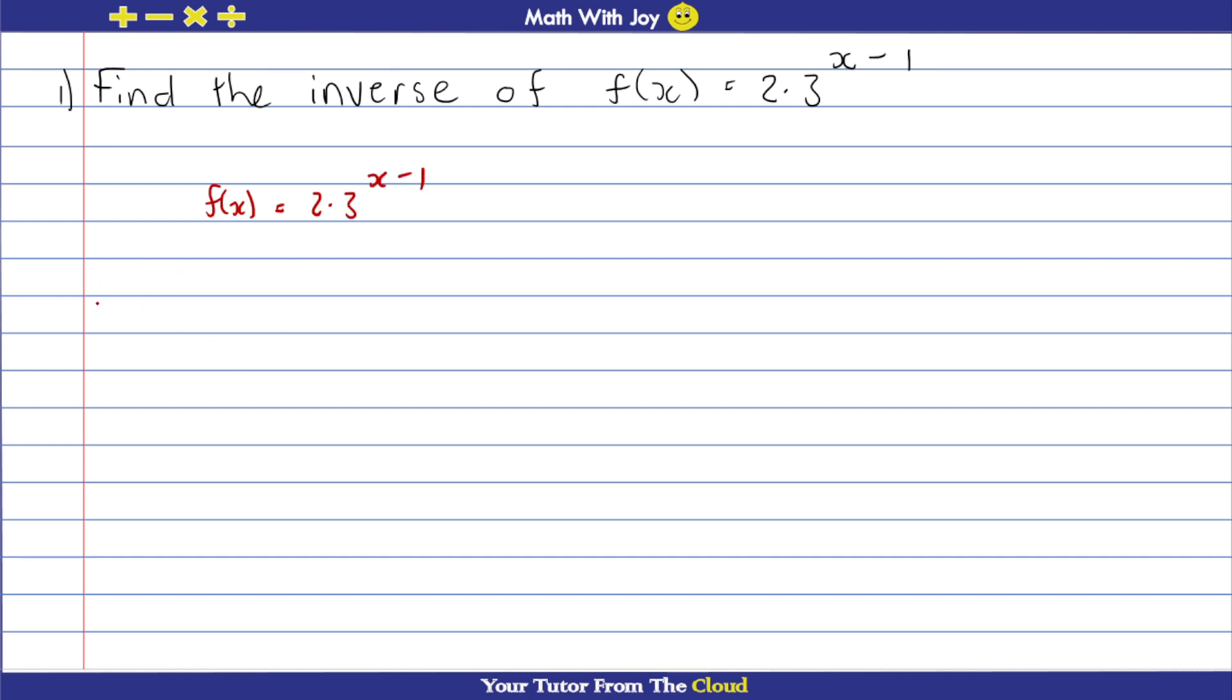Now when you want to find the inverse, you're going to write f to the minus 1. Then you make your columns. And we know where there's a y, we need to substitute that for x. And where there's an x, you need to substitute that for a y.